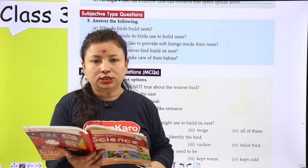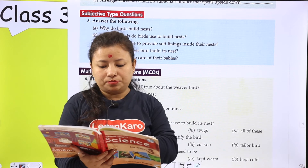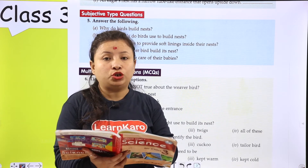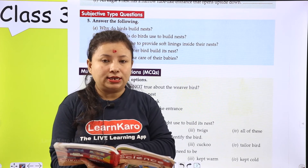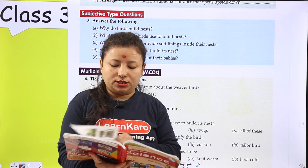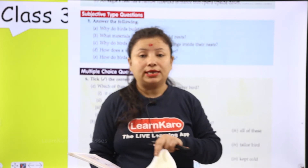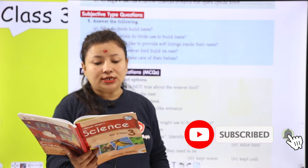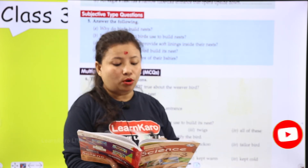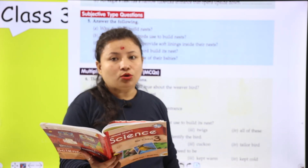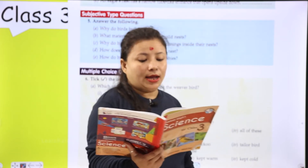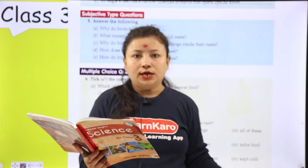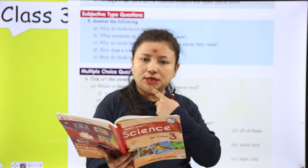It can tie knots in the nest material with its beak and its feet, and it has a narrow tube-like entrance. Question number 5 is how do birds take care of their babies? Birds apne babies ka take care kaise karte hai? Birds take care of their babies by sitting on the eggs to keep them warm, and adult birds bring food and feed them with their beak.